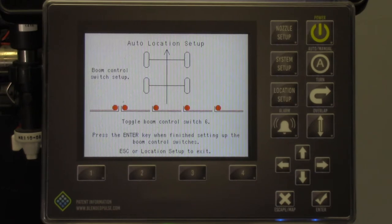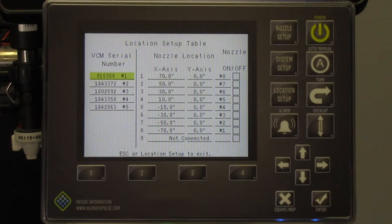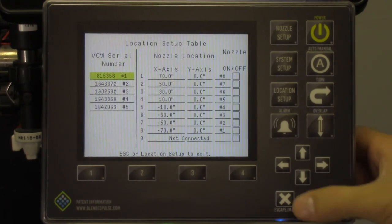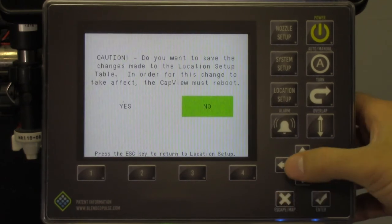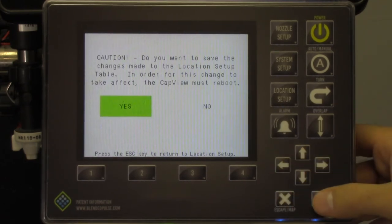Once all sections have lit up, you have completed the step and can use the check to move to the next screen. This will take you back to the location setup screen. As you try to exit the screen, it will prompt you to save the selection. You will say yes to this and the system will power down as it saves.